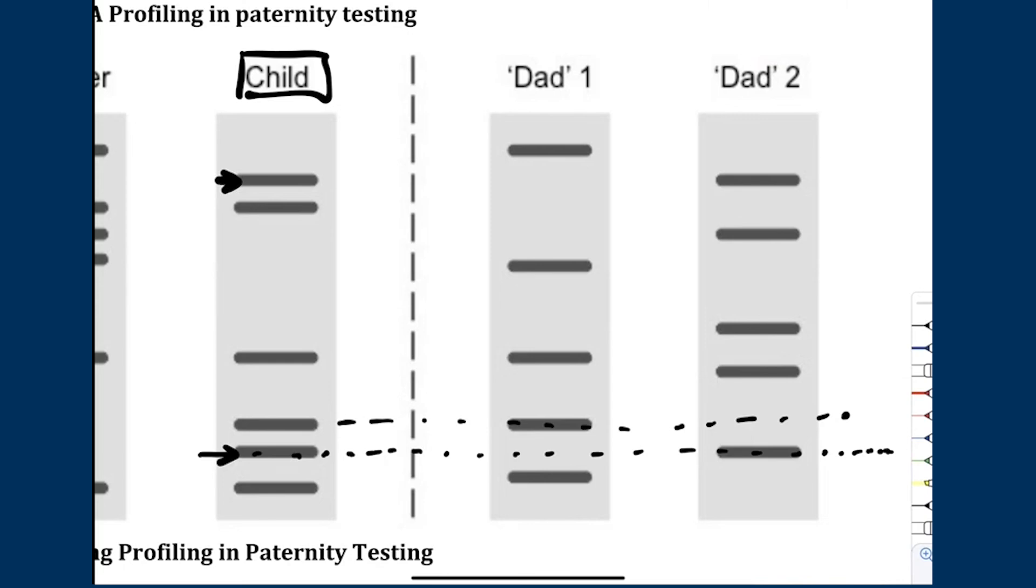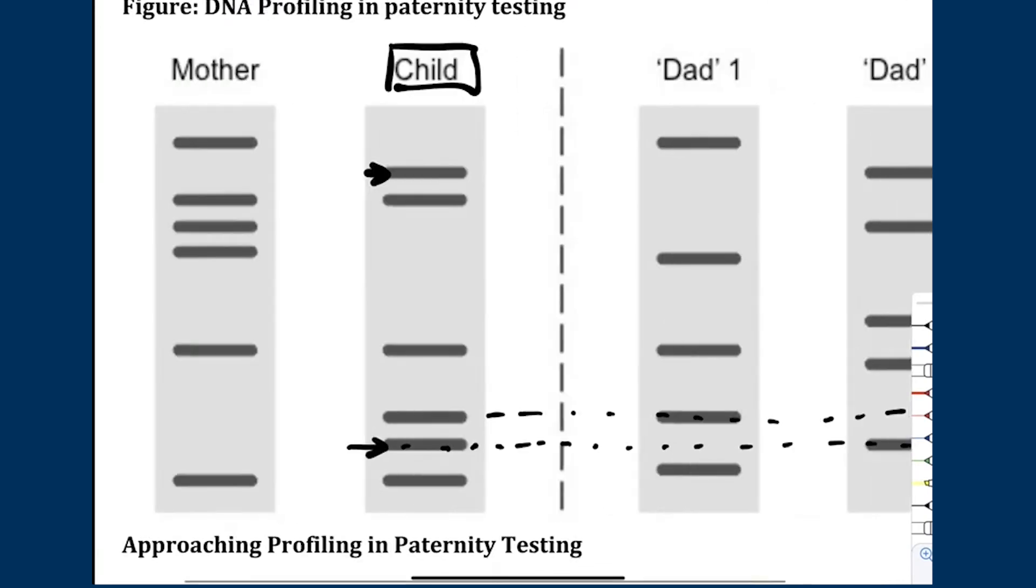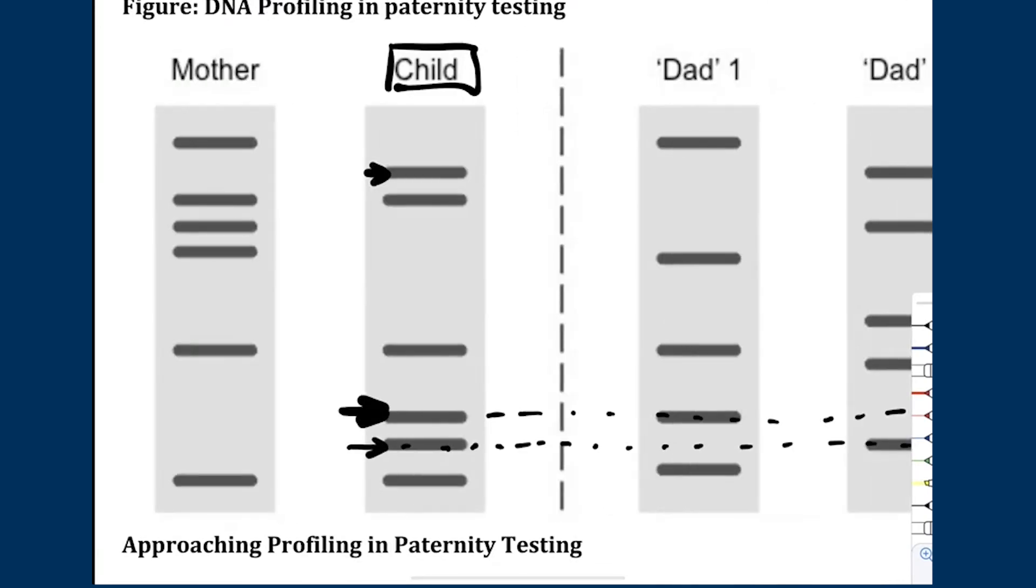But mutation can cause a new allele subtype, which is only present in the child. Since this band here is present in this individual, but no other bands are present in Dad 1—for example, this band here is not present, and this band here is not present—we can safely say this is probably a new mutation that's happening.